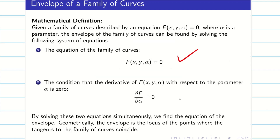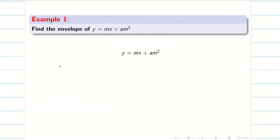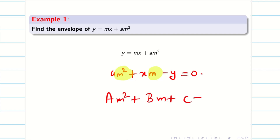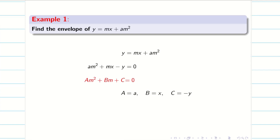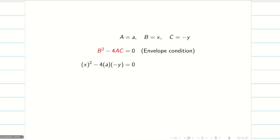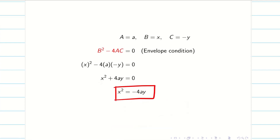If it is not quadratic, then we have to follow the differentiation method. Let us go into the problem: find the envelope of y = mx + am². Here m is the parameter. Rearranging in terms of m: am² + xm − y = 0. This is a quadratic equation in terms of m, so it looks like Am² + Bm + C = 0, where A = a, B = x, and C = −y. Therefore our condition for the envelope is B² − 4AC = 0. Substituting these three values, we get x² − 4(a)(−y).